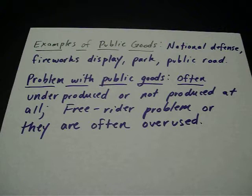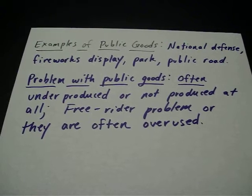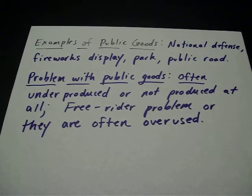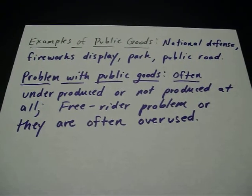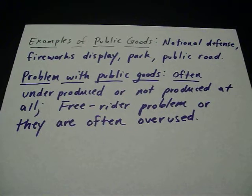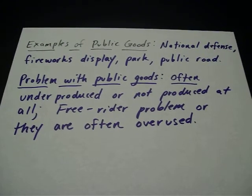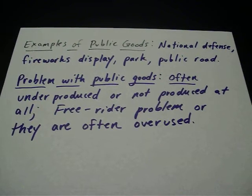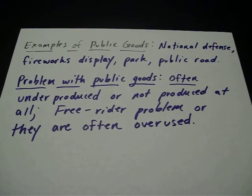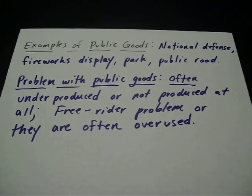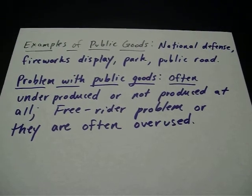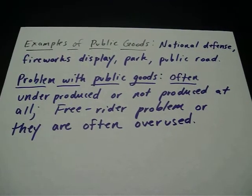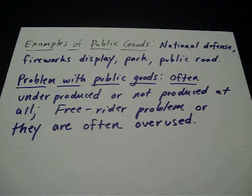We also have a free rider problem, meaning that sometimes public goods are overused or misused, because they don't really belong to anybody — they belong to the community. To sort of solve this free rider problem, the government will often collect taxes to pay for these public goods, things like national defense, a fireworks display, a public park, or a public road.